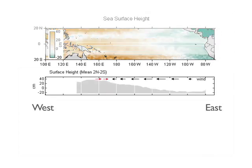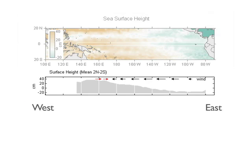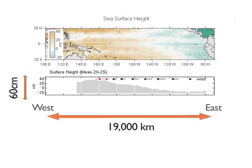The second panel describes mean sea surface height between 2 degrees north and 2 degrees south. Like the top panel, the x-axis is longitude, but the y-axis is sea surface height. The y-axis ranges from negative 20 cm to positive 40 cm, while the x-axis ranges from 80 degrees west to 140 degrees east — a distance of approximately 19,000 km. This figure clearly shows the upward western slope.